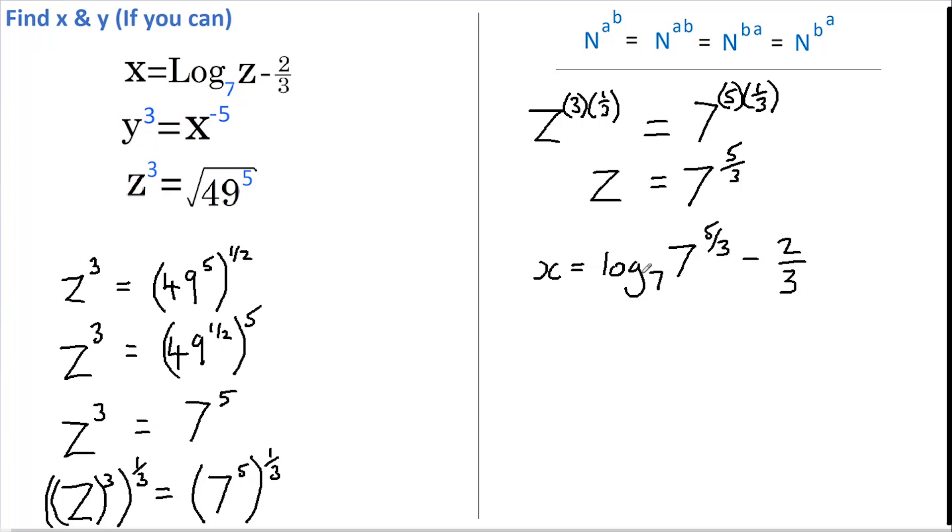Now what power do we need to raise 7 to to get 7 to the power of 5 over 3? Well, the answer is sort of in the question because the answer is 5 over 3. So X equals 5 over 3 less 2 thirds.